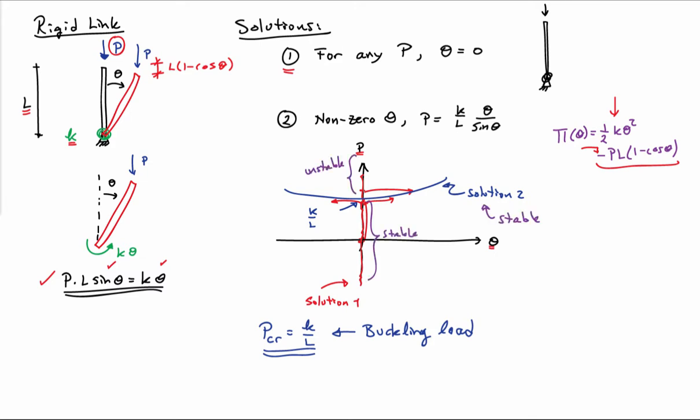If I go ahead and evaluate the second derivative of pi, and if I evaluate it on the different solution paths, what I find out is that the solution is stable along the vertical axis for all load values less than K over L. On the vertical axis for load values above K over L, it's actually unstable.